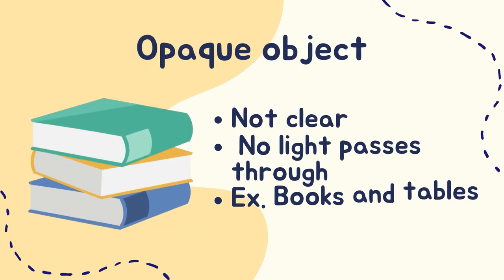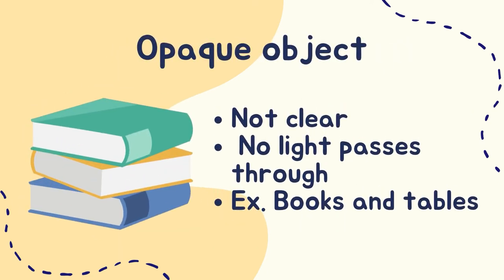Opaque objects are not clear. We cannot see through opaque objects. No light passes through these objects. Examples of opaque objects are books and tables.